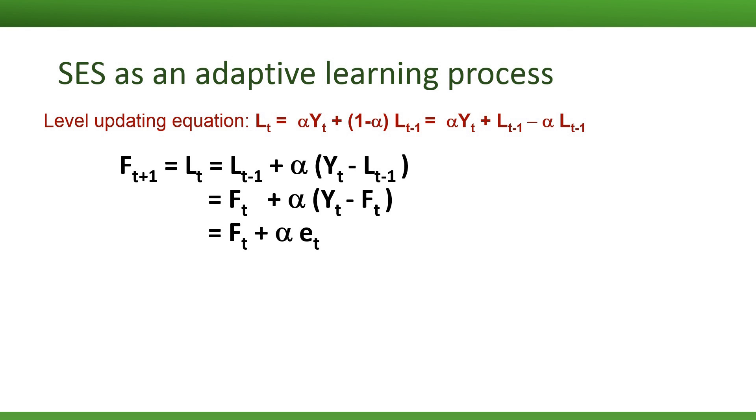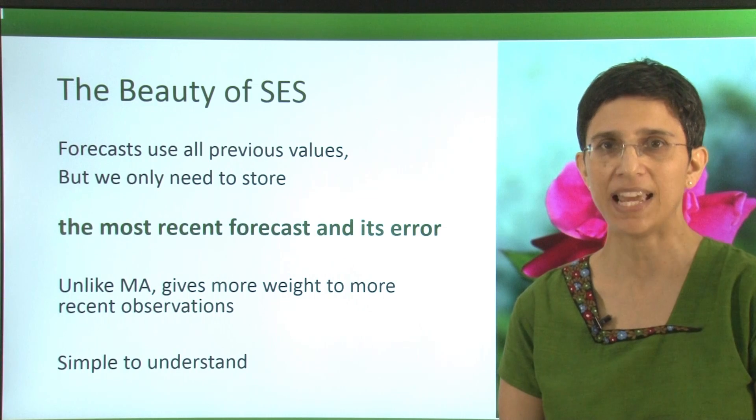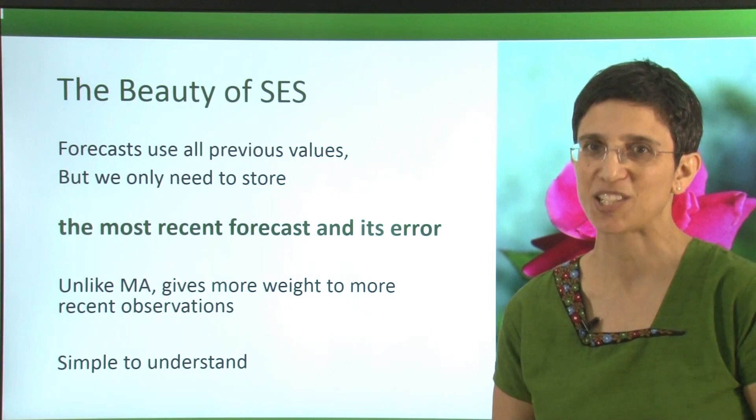This last form is very simple and useful. What it means is that to forecast the next time period, we update the previous forecast by an amount that depends on the error in the previous forecast. This last formulation really shows the beauty of simple exponential smoothing. Forecasts use all the previous values, but we only need to store the most recent forecast and the most recent forecast error. Unlike moving average, the simple exponential smoothing does give more weight to more recent observations. It's also relatively simple to understand depending on which of the explanations you choose.